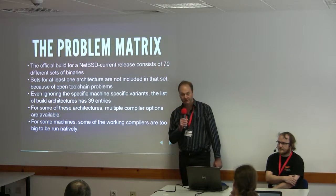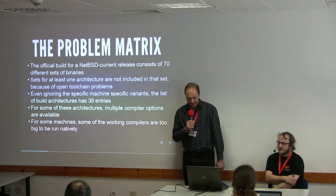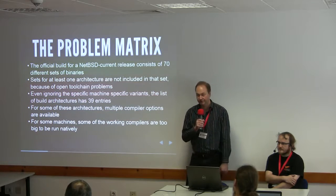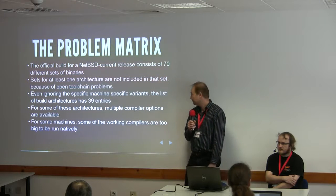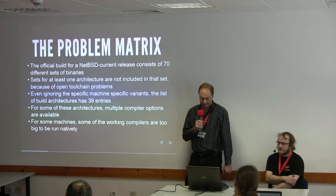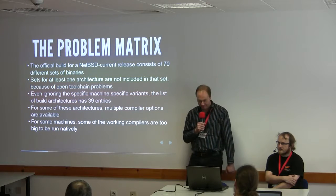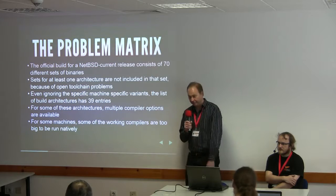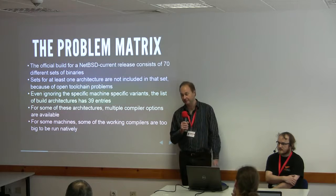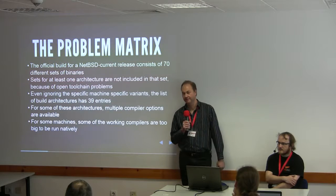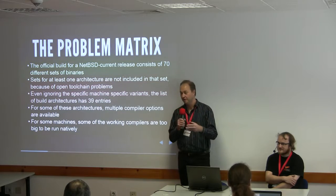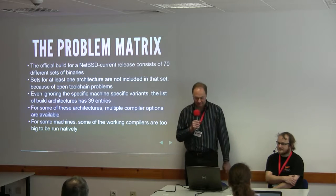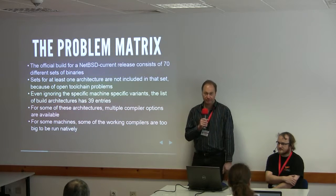Let's look at what kind of problem matrix we have to solve. We have about 70 architectures that we build binaries for. One is not in the set of officially built things — we build on the cluster because it has no native toolchain yet. And even if we ignore this oddball, we have 39 architectures. Probably half of them are ARM variants, because we build ARM in little-endian, big-endian, with hardware float, version 6, version 7, and so on. For some of these we have options — on i386 or AMD64 we can use Clang or GCC alternatively. And for some of these machines, none of these compilers can be used at runtime, which is a big problem.